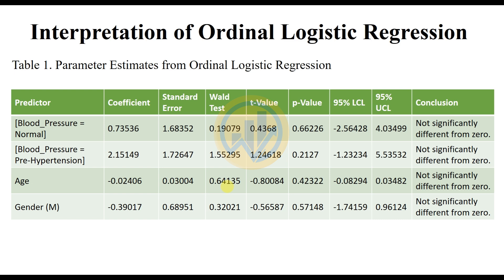The first table shows the parameter estimates of ordinal logistic regression in ArginBro. The four predictor values presented are: normal blood pressure, hypertension blood pressure, age, and gender. The conclusion of the table is that none of the predictor values are statistically different from zero. The coefficients, standard errors, t-test values, and p-values are all presented in the parameter estimates table.